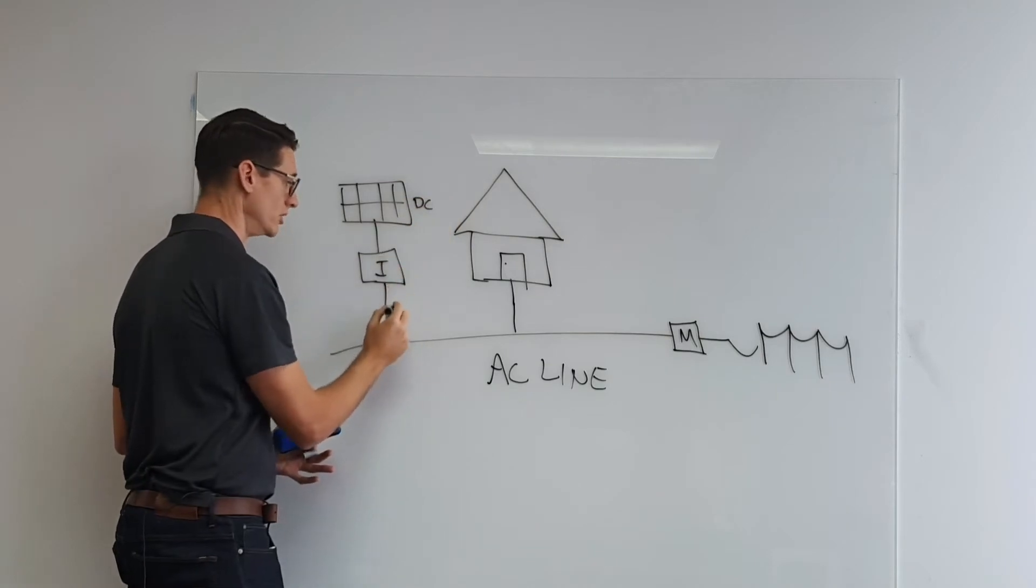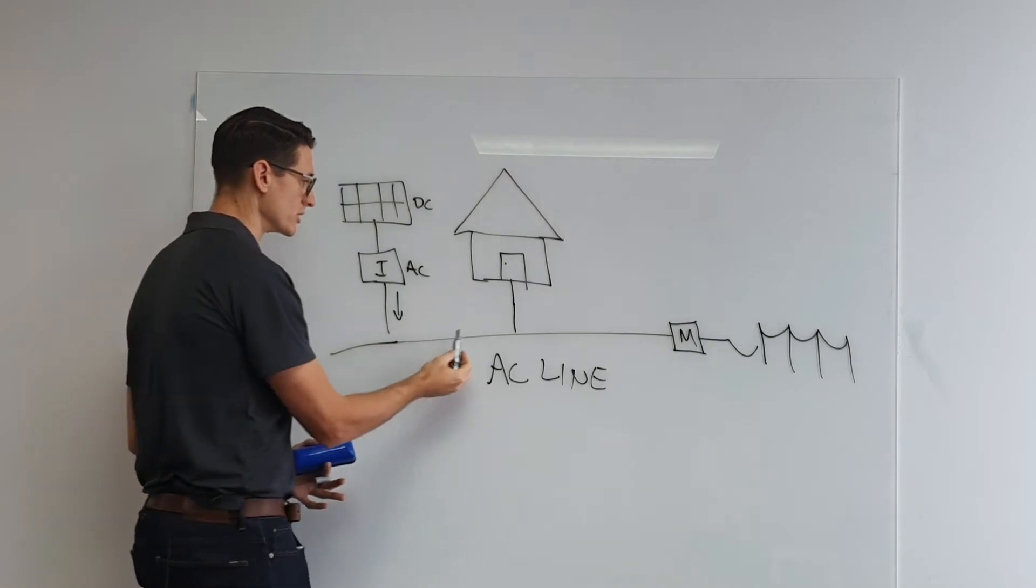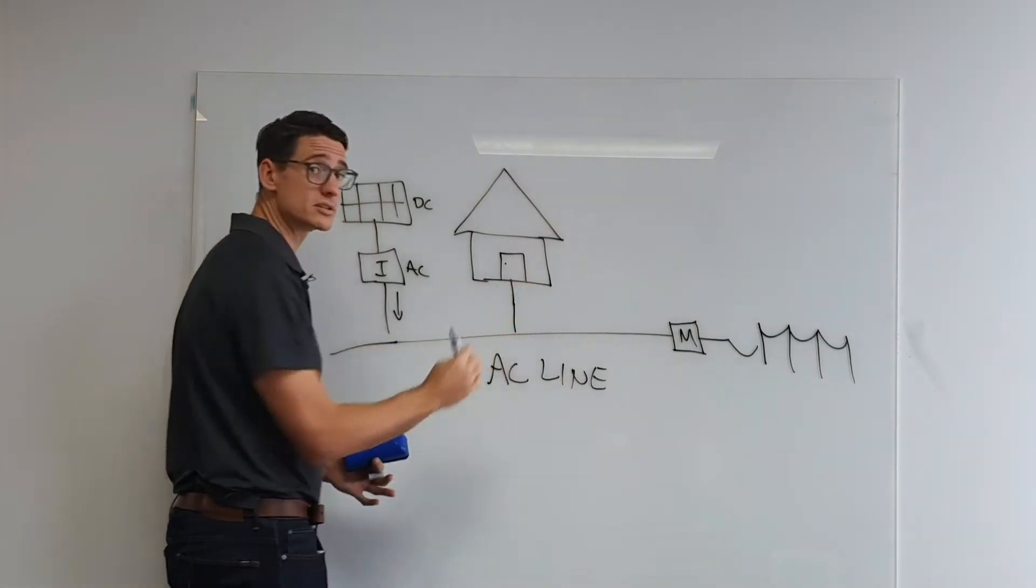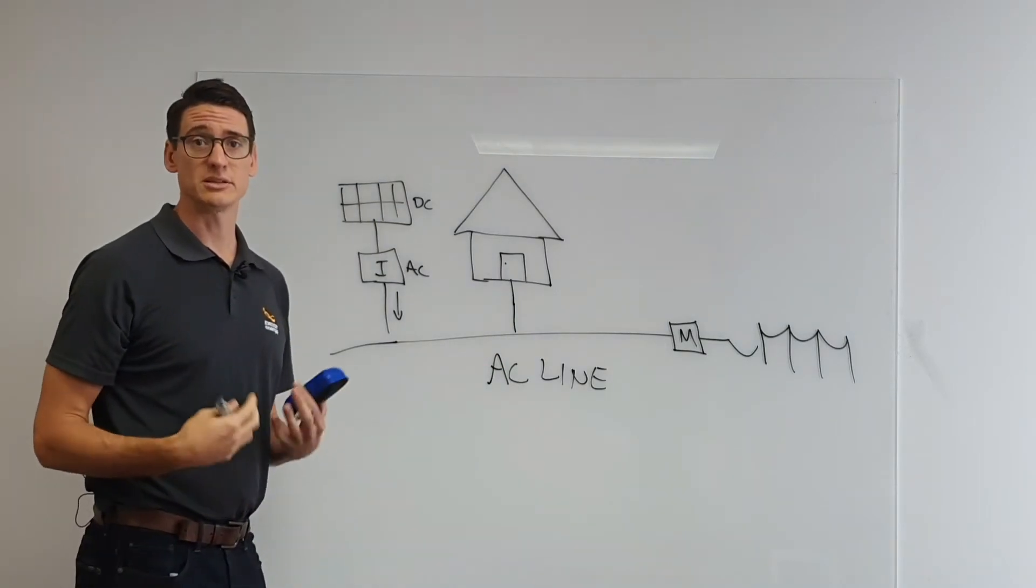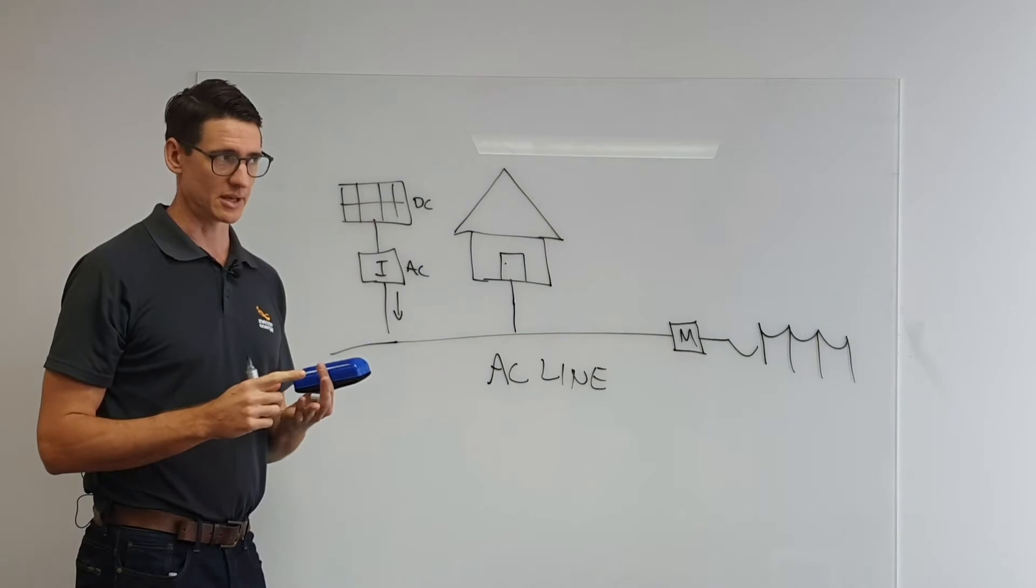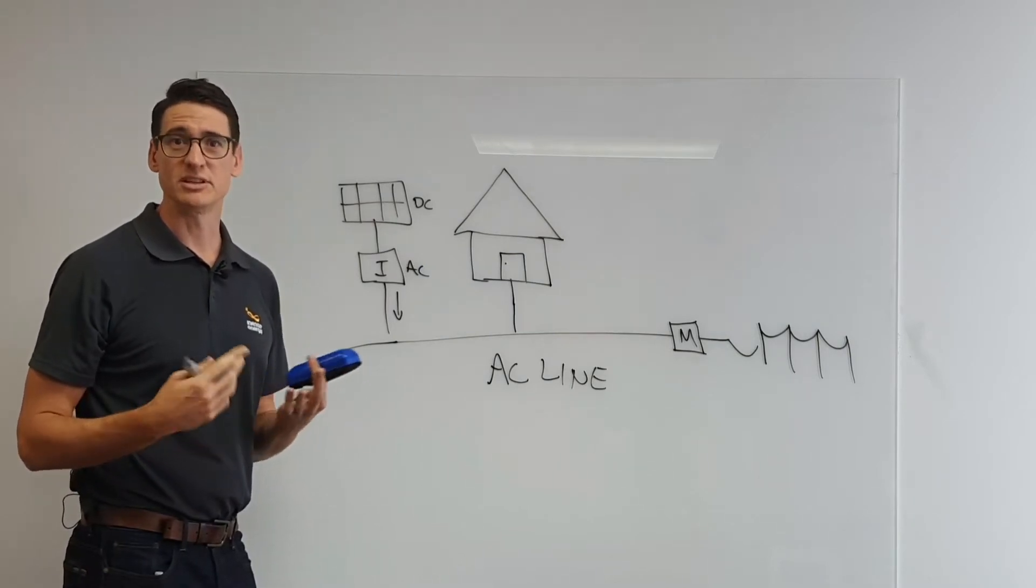Your inverter's role is to convert that into AC power so that it can then work its way into the home via your switchboard, and everything in your home is ultimately connected into your switchboard. So that energy then becomes available to your kettle, air conditioning, these sorts of things.